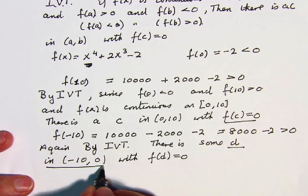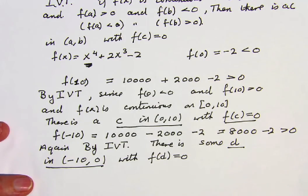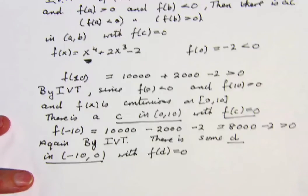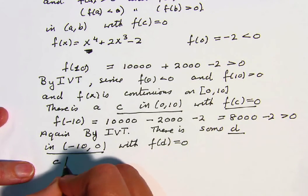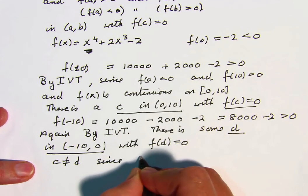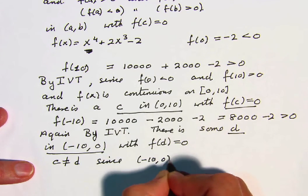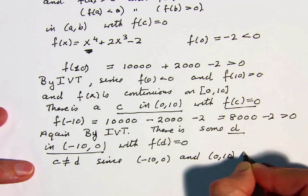Now that d is in that open interval, the c is in the open interval from 0 to 10, these intervals do not overlap, so therefore c is not equal to d, since minus 10 to 0 and 0 to 10 do not overlap.